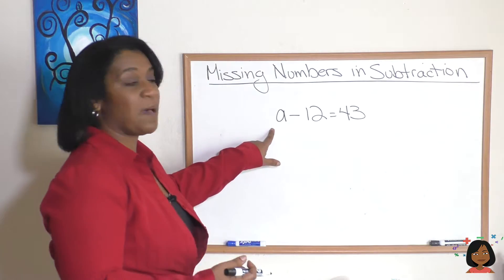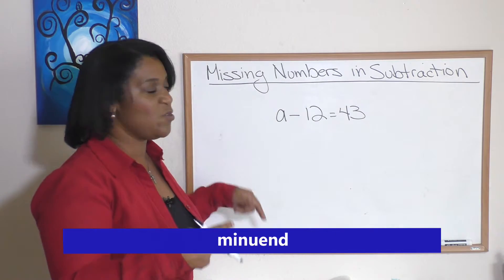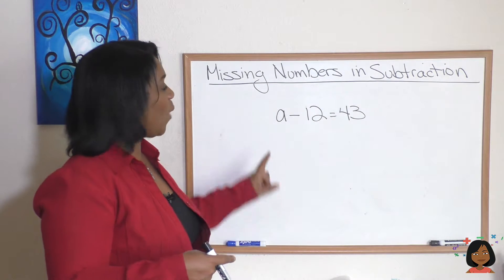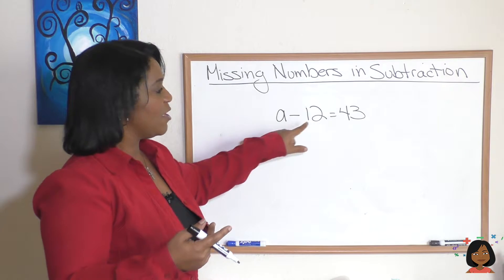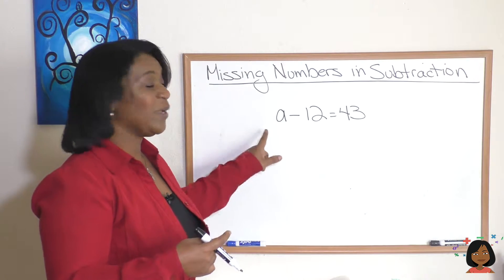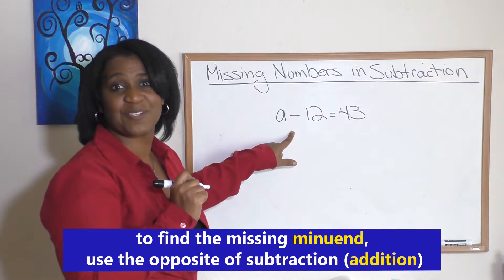So here we have a missing—what is this called? Remember, a minuend. Right, the first one is a minuend minus 12 equals 43. Well, what we know about this a is it's going to have to be a larger number than 12 and 43, so that might give you a hint. When we have a missing minuend, we use the opposite of subtraction, which is addition, to find the answer.